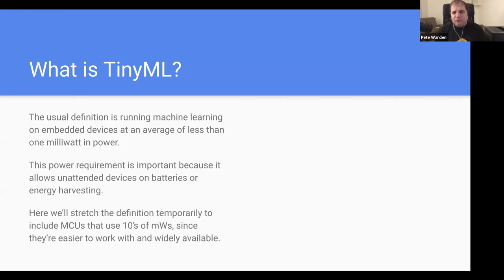Once you start to get below one milliwatt, what that opens up is the possibility that you can have small devices powered on a coin battery that can last for months or years, and potentially use energy harvesting. They become radically easier to deploy than things you either need to change batteries on or plug into the wall. The working definition we have of TinyML is: can you do machine learning at below one milliwatt? We do stretch that definition to include things that use tens of milliwatts, since some are a lot easier to work with, but we're always keeping our eye on that application domain.